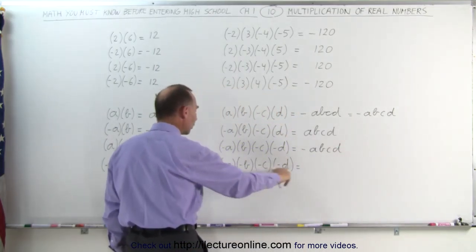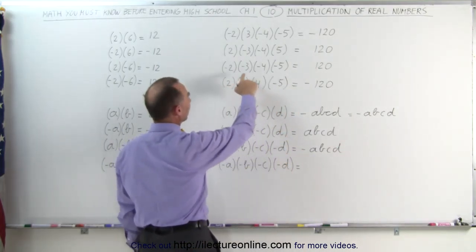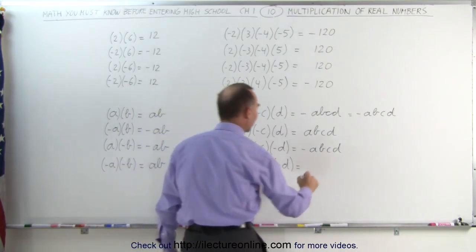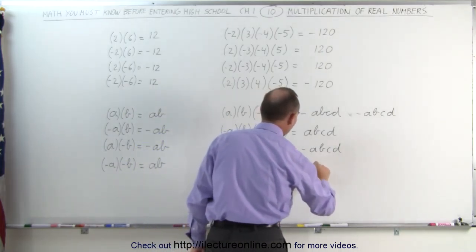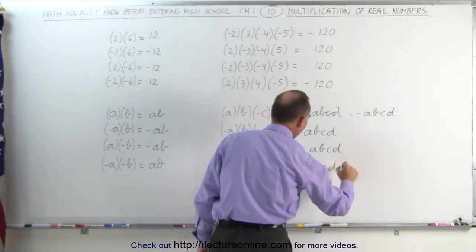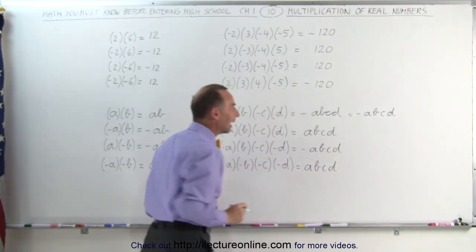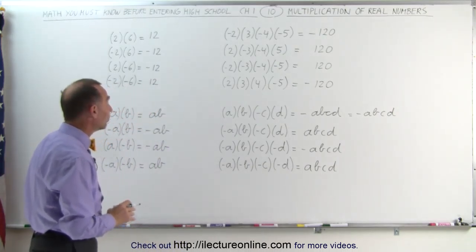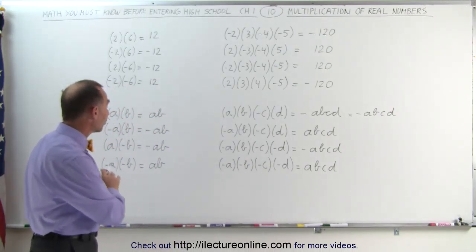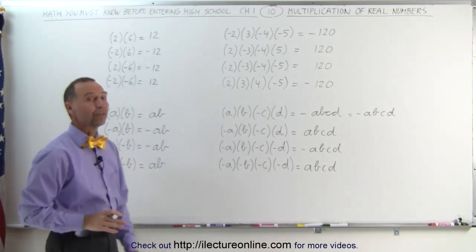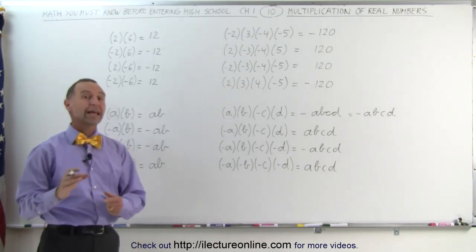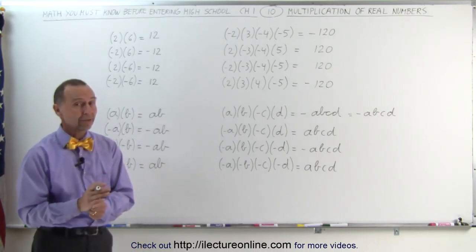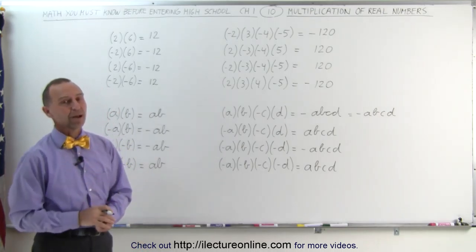And finally four negatives — just like we did over here, there are four negatives, that's an even number of negatives, and that gives you a positive answer: abcd. And that's how we multiply real numbers. When signs are involved, an odd number of negatives makes the answer negative, and an even number of negatives when multiplying together makes the answer positive.